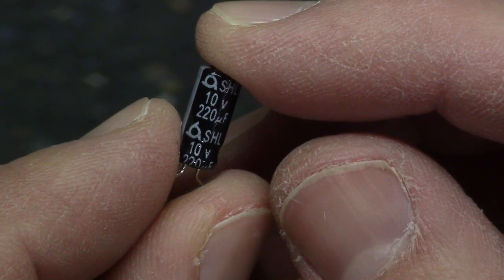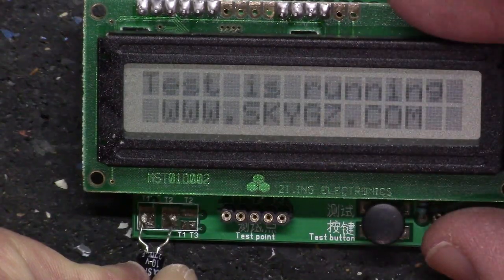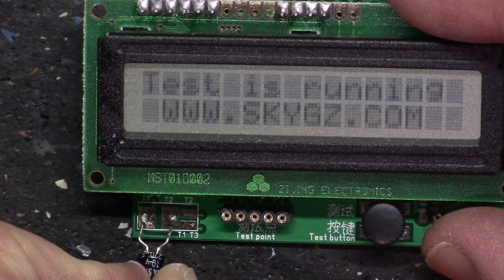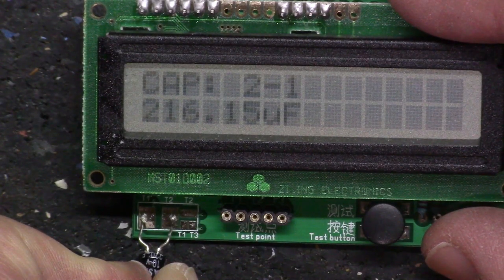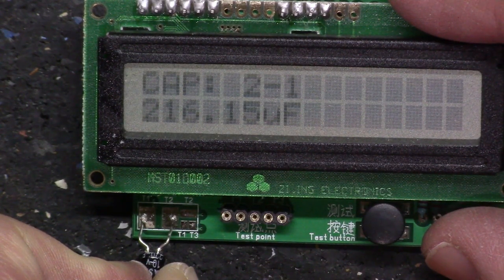This is a 10 volt 220 microfarad. I'm running a test here, holding the contacts on, and it's coming up as 216 microfarad. So this is a good capacitor. It's within range, so there's nothing wrong with that.